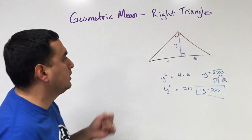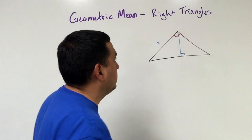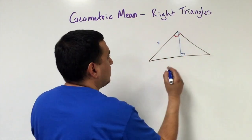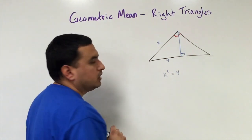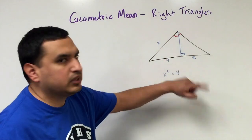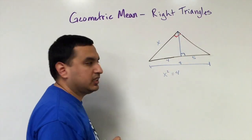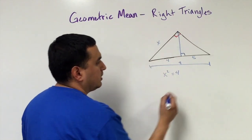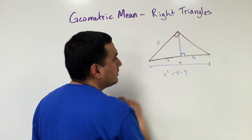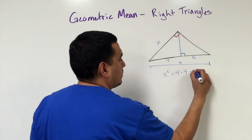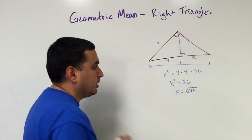The next case is if I want to solve for one of the legs. I'll call it x. The height divides the triangle, and whatever number is on the same side as x is the one we use. So x squared equals 4 times the entire hypotenuse length. Since 4 plus 5 is 9, we do 4 times 9 which is 36. So x squared equals 36, and x equals the square root of 36, which is 6.